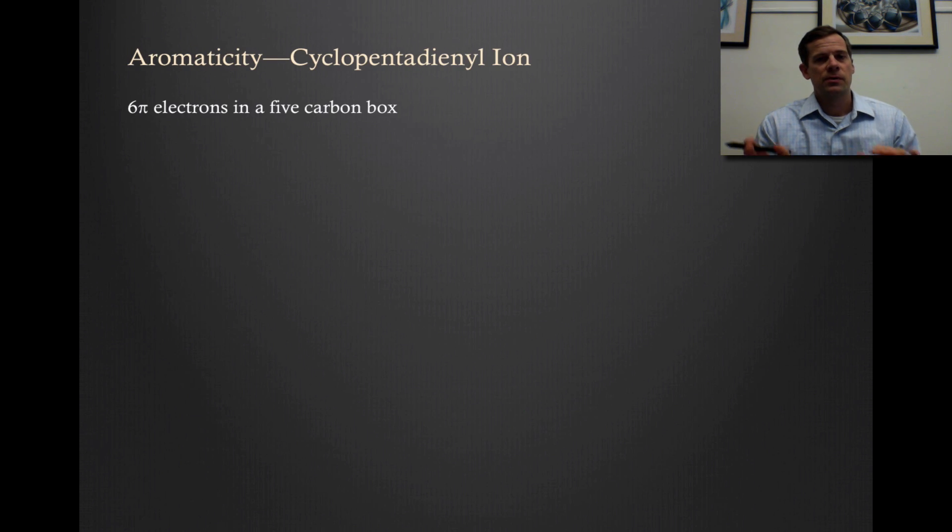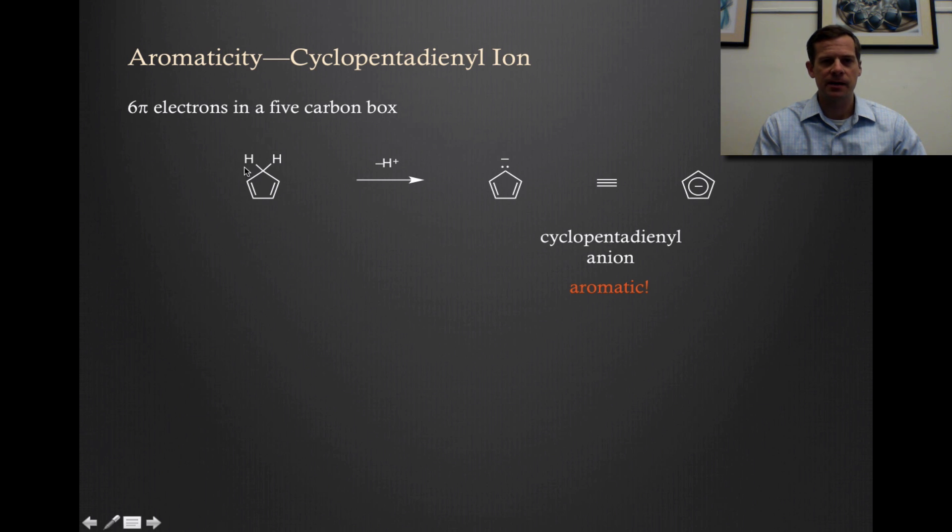We can also do the opposite. We can put the same six electrons in a five-carbon box. To do that, we're going to take cyclopentadiene as a precursor. In this case, instead of ionizing, we're actually going to deprotonate. We're going to lose a proton and that pair of electrons that was in that carbon-hydrogen bond is then going to be an anion. But it's not going to be localized on that carbon as you would have with a normal carbanion. It's actually going to be part of this entire planar conjugated system. So this is called cyclopentadienyl anion and it is an example of an aromatic.